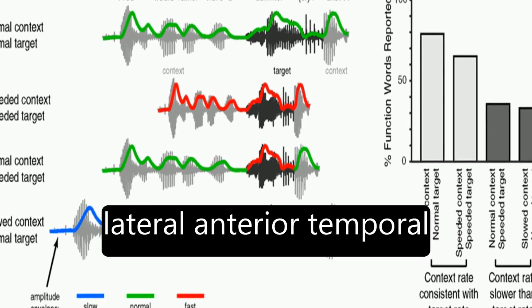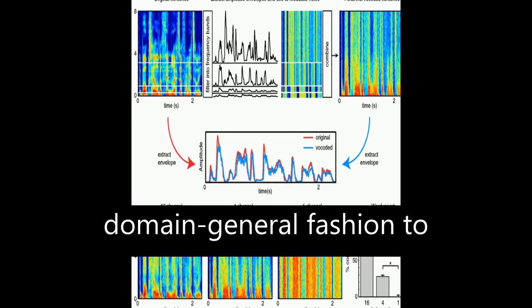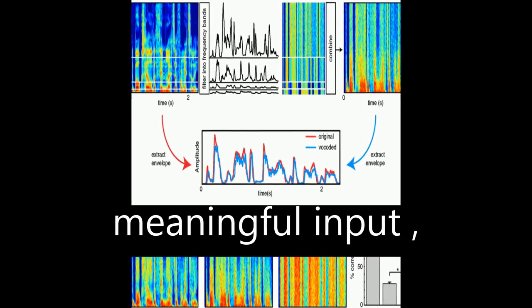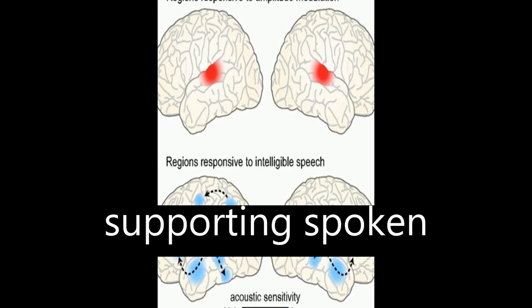It also proposes that lateral anterior temporal cortex functions in a domain-general fashion to support ongoing memory and integration of meaningful input, forming the foundation of a rhythmic hierarchy supporting spoken language.